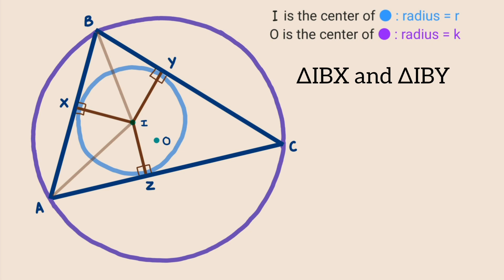Therefore the remaining parts between them become equal. So the two corresponding angles become equal — let this angle be variable β. Similarly, another pair of triangles are congruent, so their two angles become equal — let this angle be variable θ.